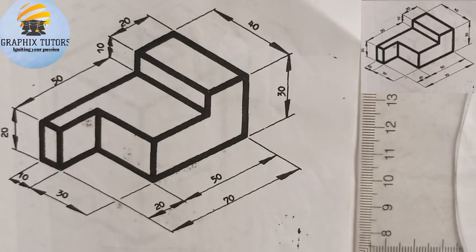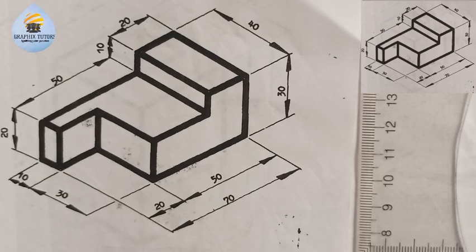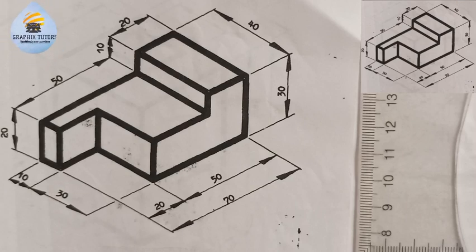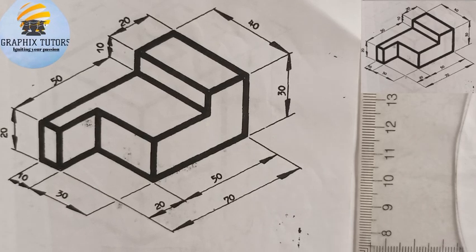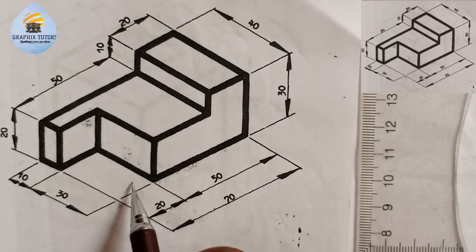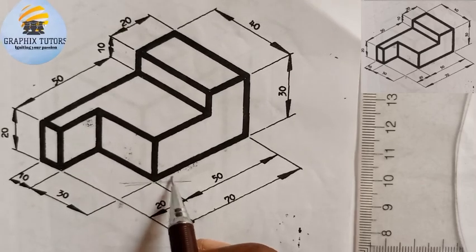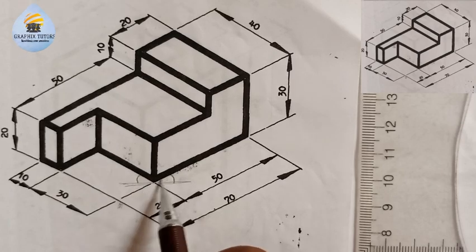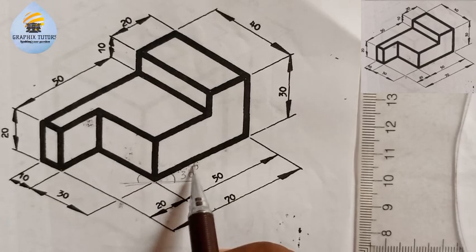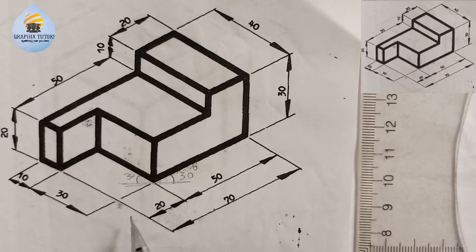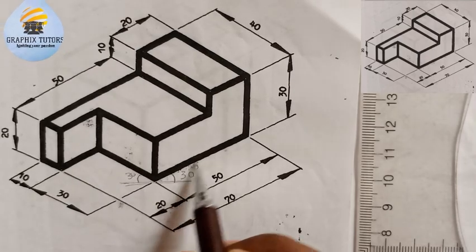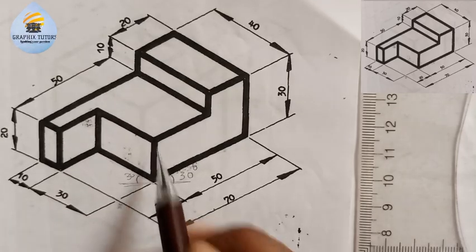Good day everyone, my name is Graphics. Today we are told to reproduce this block in isometric. When you hear about isometric, we're talking about three axes: x, y, and z. I'm going to assume that my axis is at this point here. If I extend this, it's like this — placed at an angle of 30 degrees on each side.